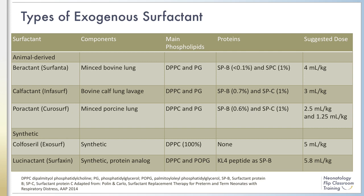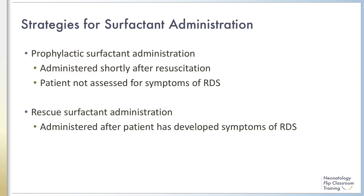This table shows a comparison of the various formulations, their composition, and suggested dose. Prophylactic surfactant administration is surfactant given down an endotracheal tube of an infant at risk for RDS shortly after initial resuscitation. In contrast, rescue surfactant is given to an infant after RDS is diagnosed, which could occur shortly after birth or several hours later.